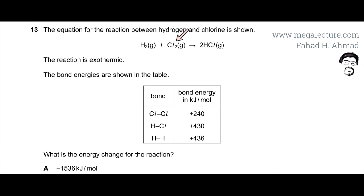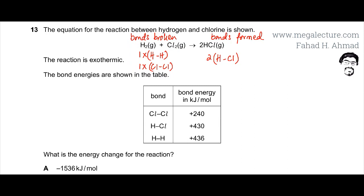First, figure out how many bonds are broken and formed. Start with bonds broken - reactant bonds. There's one H2 molecule, so one H-H bond would be broken. Remember to count bonds, not atoms. Then Cl2 has one Cl-Cl bond that would be broken.